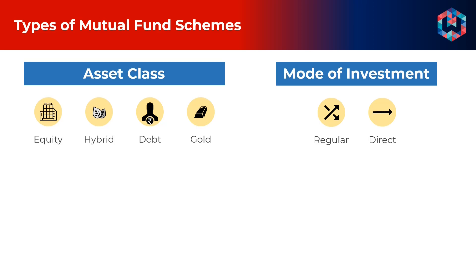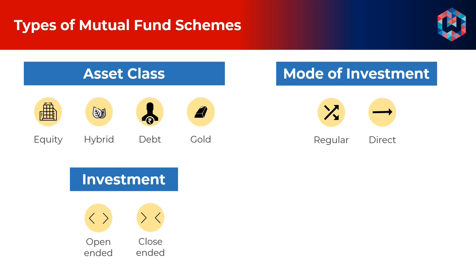When an investor goes through a distributor, he invests through the regular mode, whereas an investor who invests through the AMC opts for the direct plan. Open-ended schemes are flexible and liquid, allowing investors to scale up investments or scale down positions at any point. A close-ended fund accepts investments only during the new fund offering or NFO period. Most close-ended schemes must be held to maturity, and while the units are listed on an exchange, they are traded less frequently.